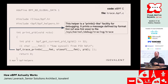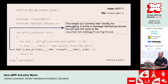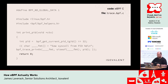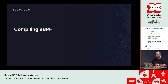What this function actually does is output debug information to a particular file in /sys/kernel so we can see it later. This isn't something you do in a real program, but it's useful for debug examples. And then finally we just return zero. That's it — that's the BPF code. Pretty simple.